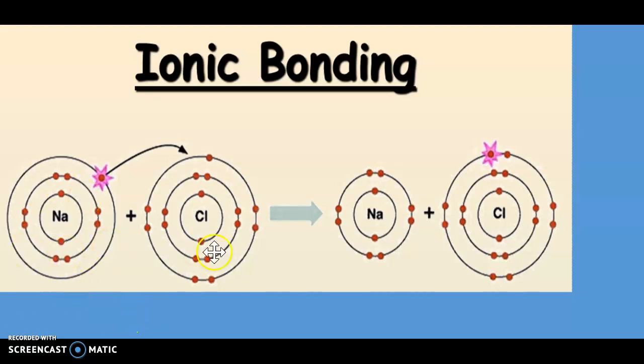You can see sodium and chlorine in the element formation. Sodium has 11 electrons with the electronic configuration of 2, 8, 1.